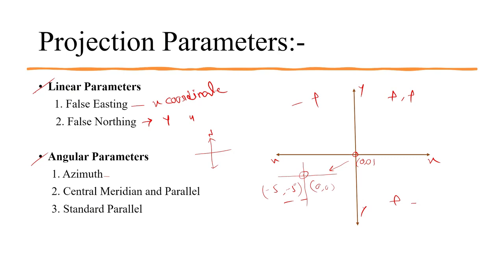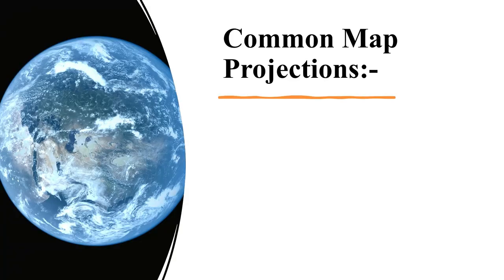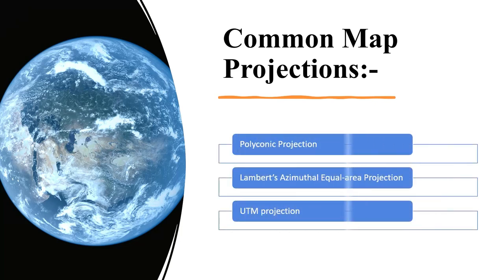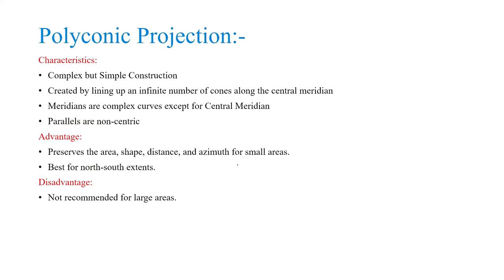Next we come to the common map projection types. There are three common types: polyconic projection, Lambert's azimuthal equal-area projection, and UTM projection. In polyconic projection, the characteristic is that it is complex but simple to construct. It is created by lining up an infinite number of cones along the central meridian. The meridians are complex curves except the central meridian, and parallels are non-concentric.